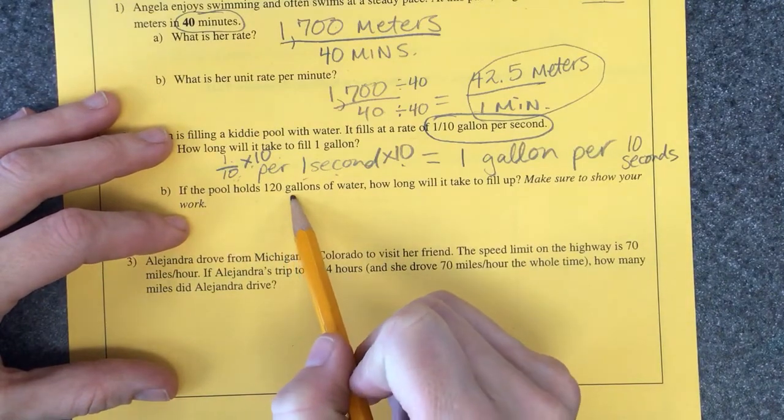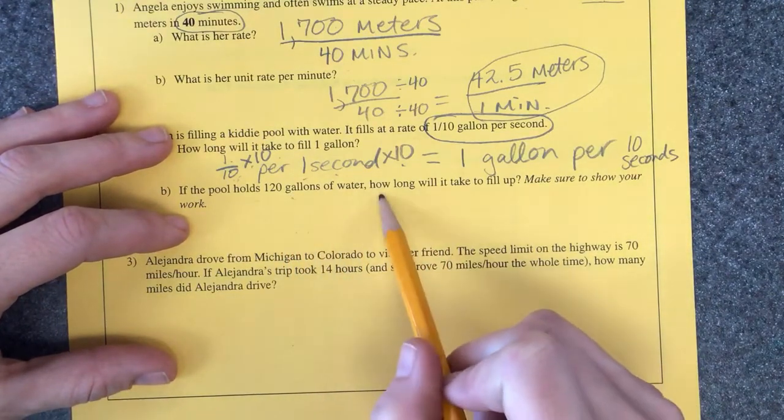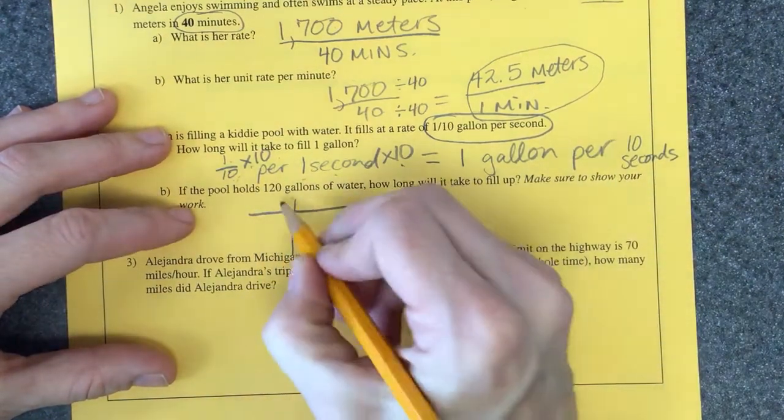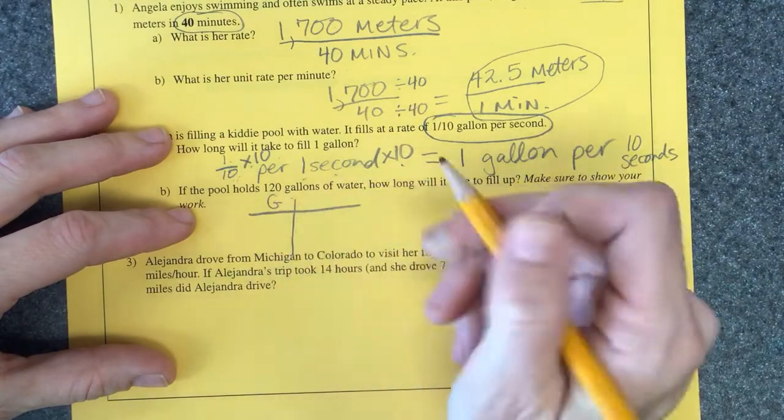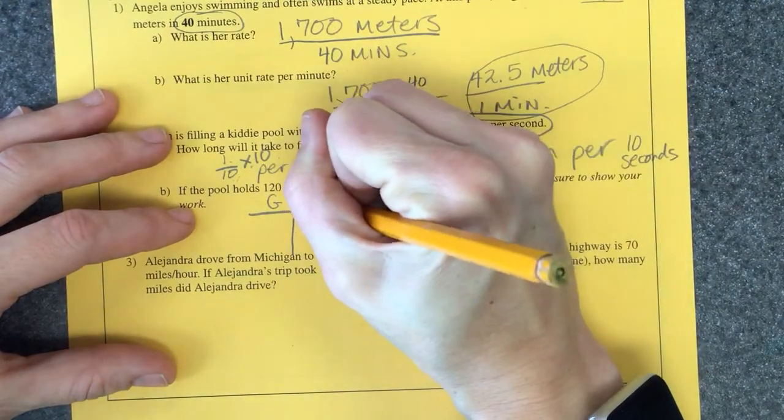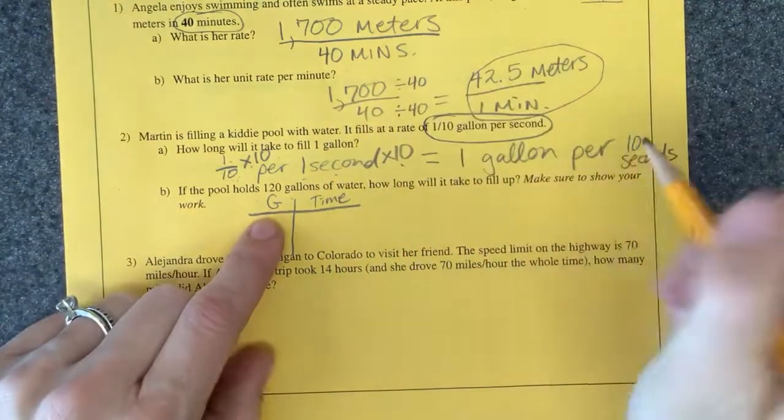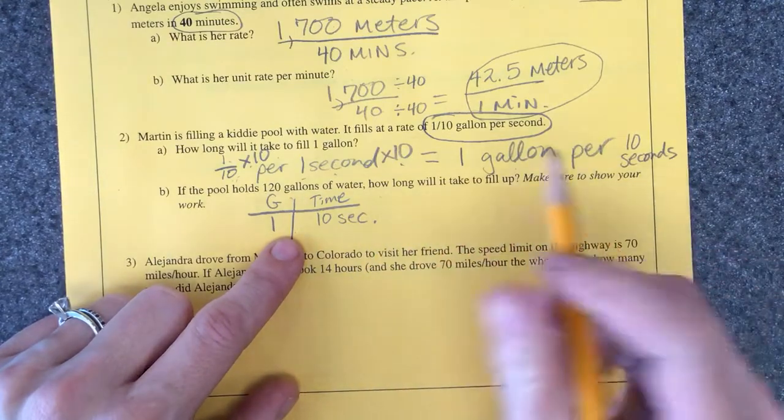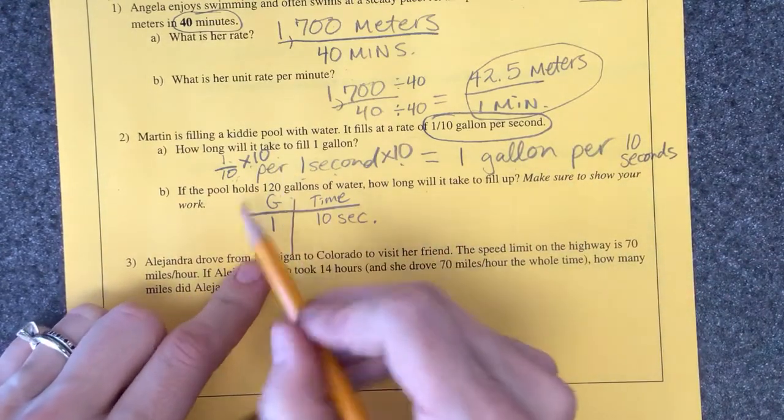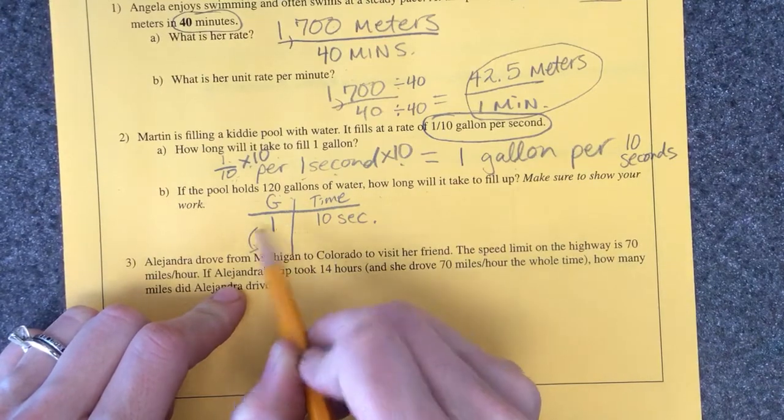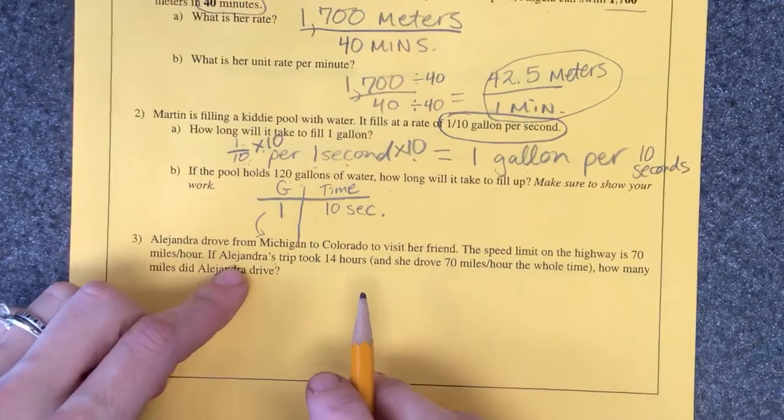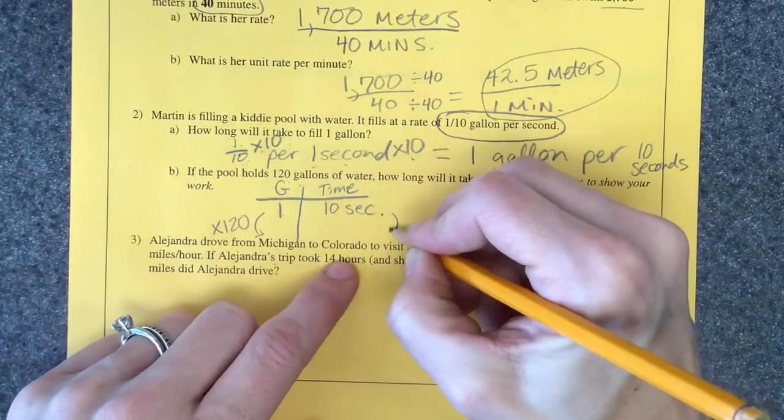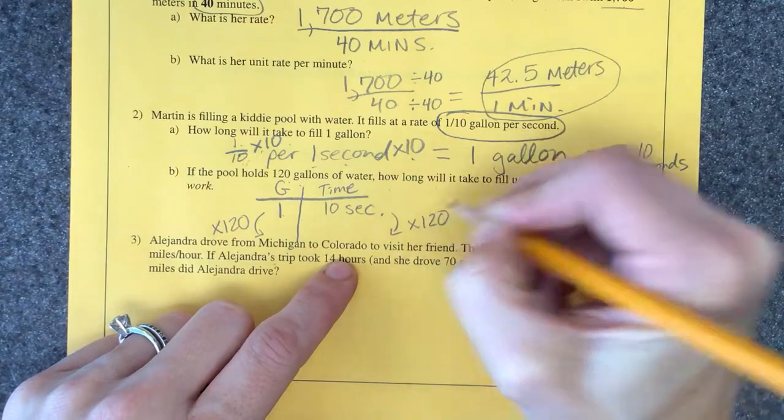If the pool holds 120 gallons of water, how long will it take to fill up? I'm going to make a table, on one side gallons and on the other side time. We just found out one gallon takes 10 seconds. But we want 120. What should I multiply by? One times what would give me 120? 120, great job. You're on fire today. What is 10 times 120?